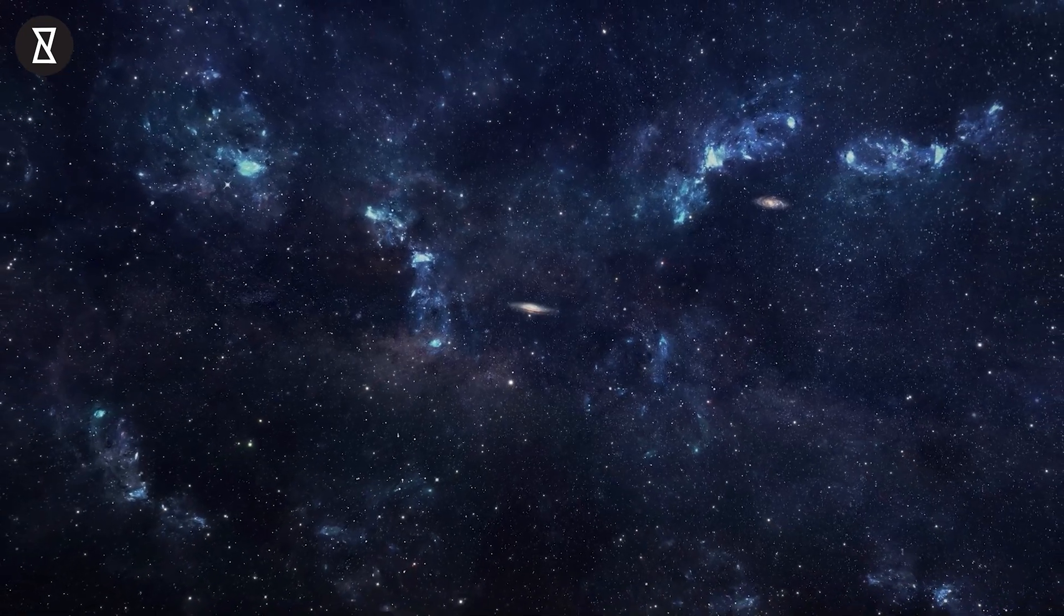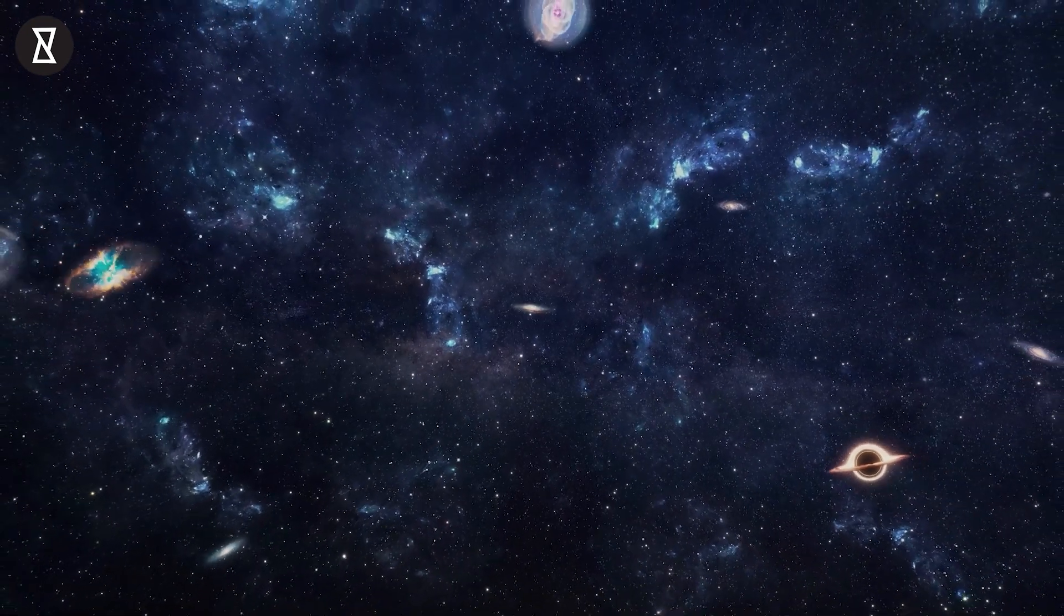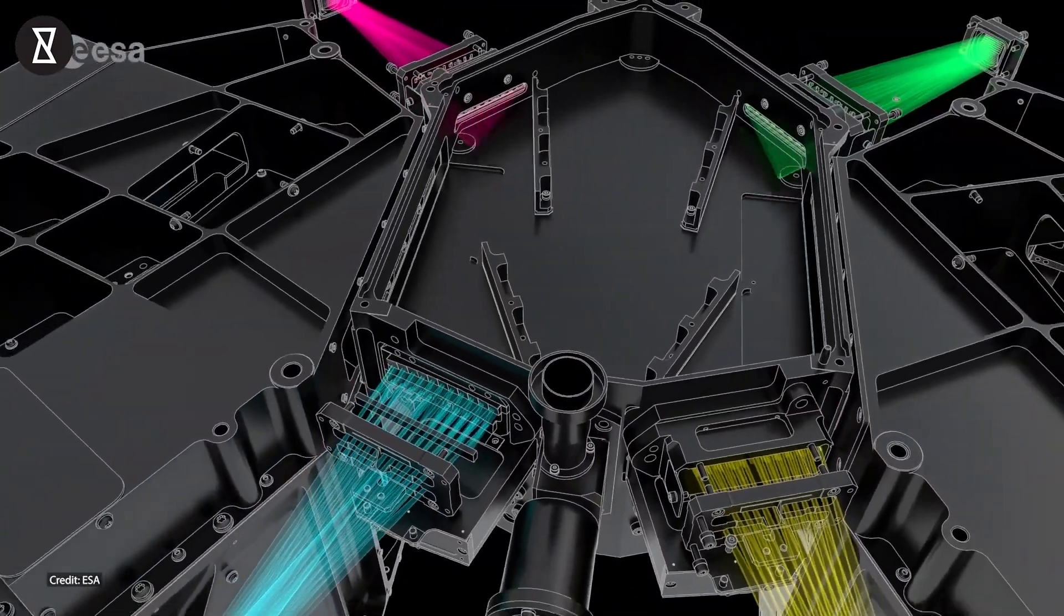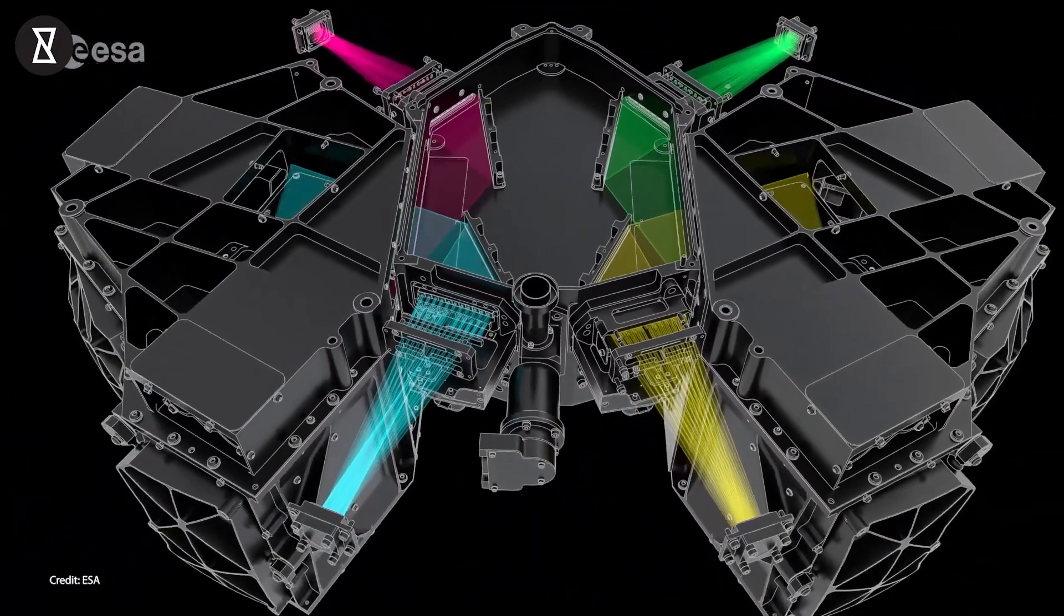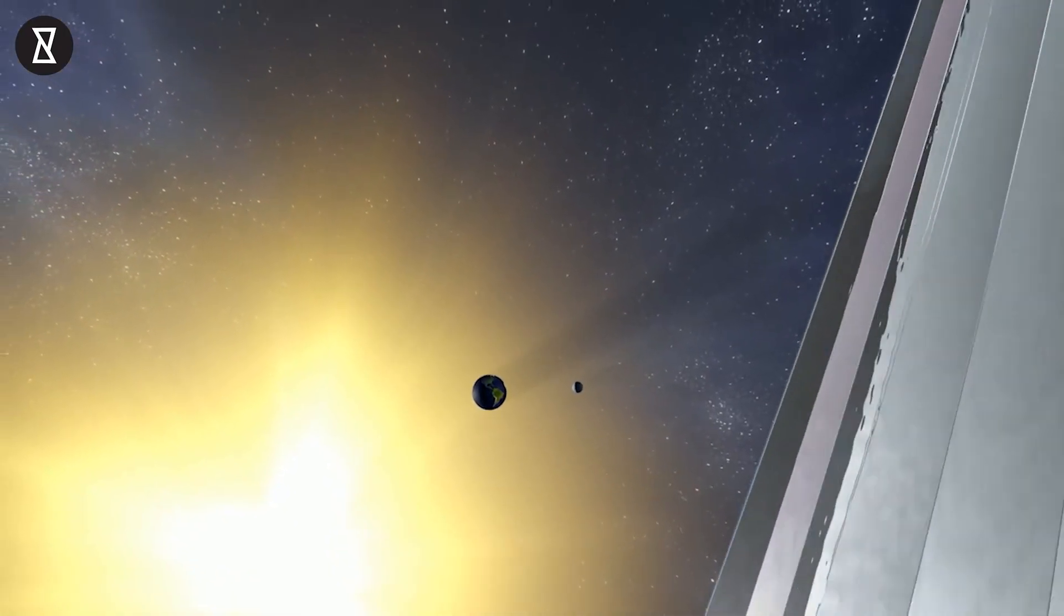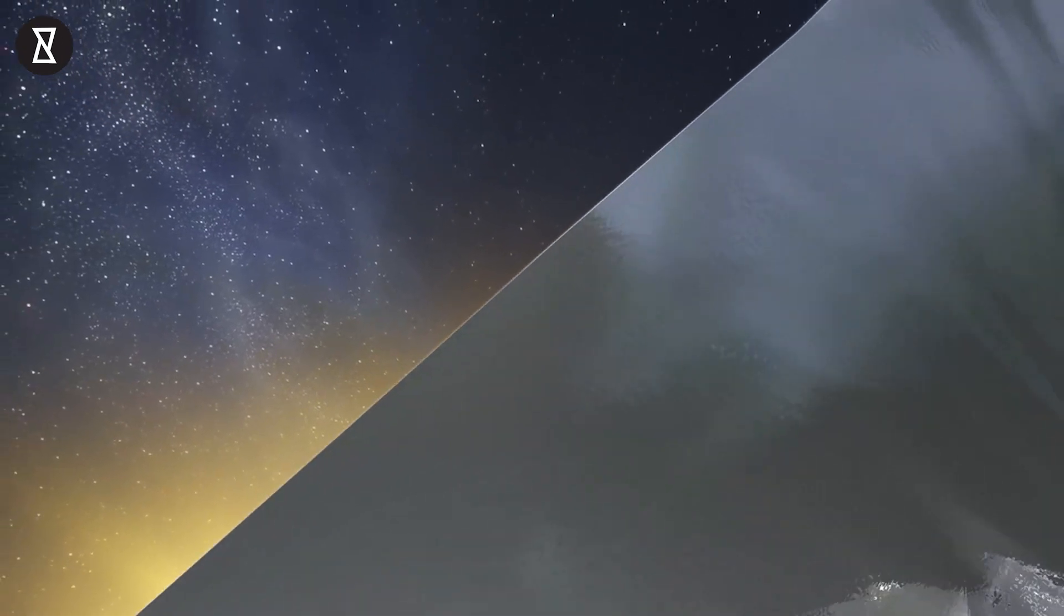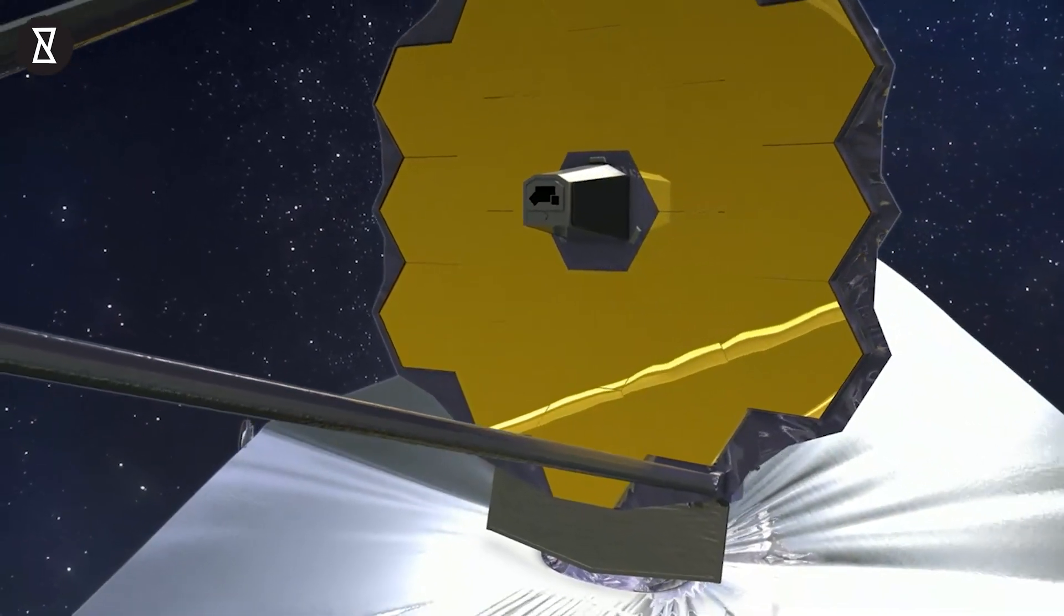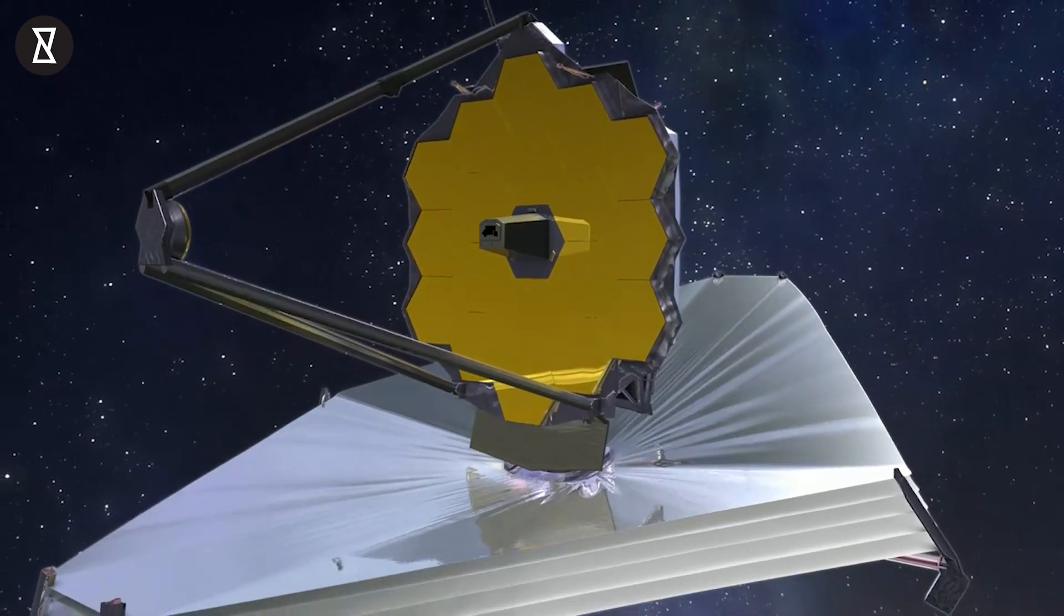Team members will capture test photos of stars and other known objects now that the instrument is at operational temperature, which will be used for calibration and to assess the equipment's operations and performance. Webb's initial science photos will be sent this summer once the team completes these preparations and calibrates the other three sensors. We cannot wait. What about you guys?